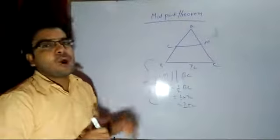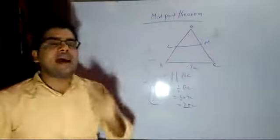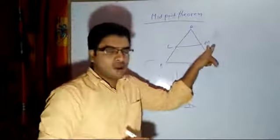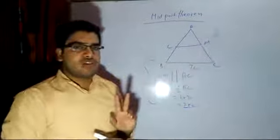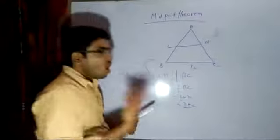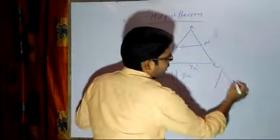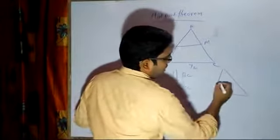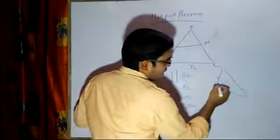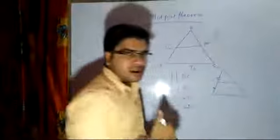The most important thing is that to apply this midpoint theorem, you should have one of two conditions. First, either they will give you the midpoints of any two sides of the triangle — at least any two sides of the triangle. Or they will say that we have a triangle in such a way that one line is running parallel to another side, and suppose they will say these two sides are parallel.